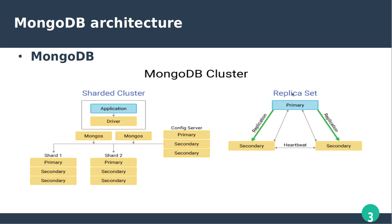Let us explore the components in the architecture. The first component is replica sets. Replica sets in MongoDB provide redundancy and high availability. They comprise a group of MongoDB processes that maintain the same data set.